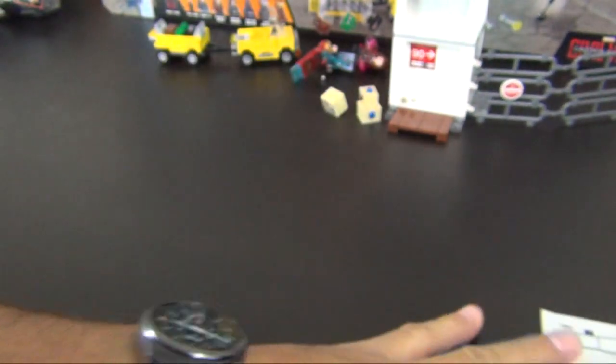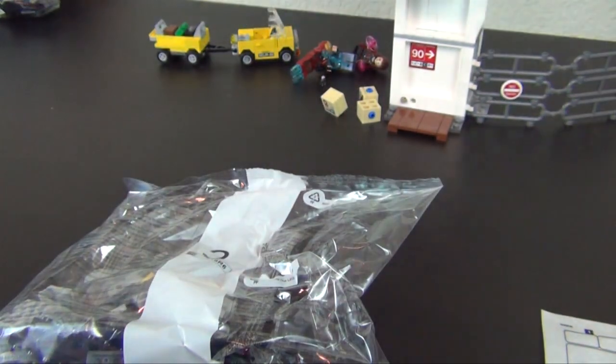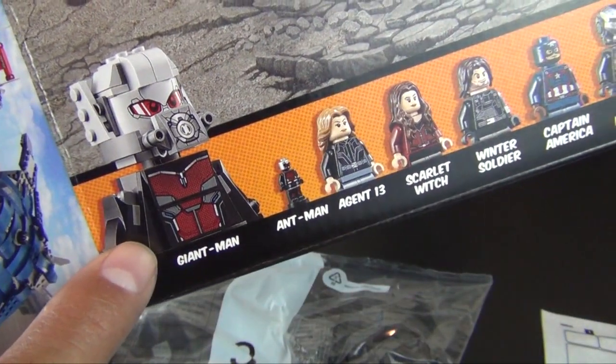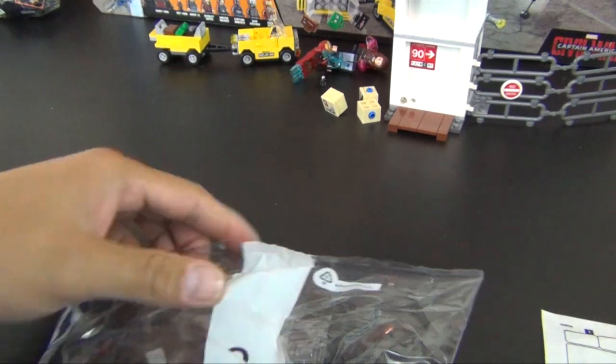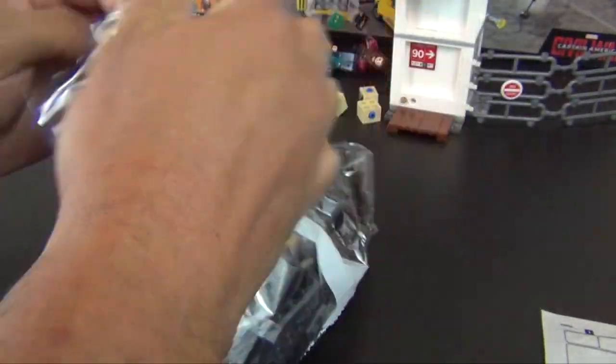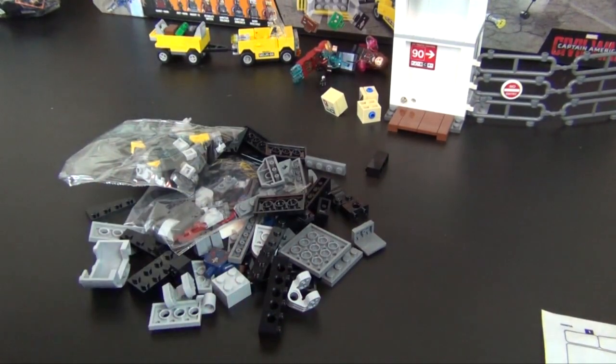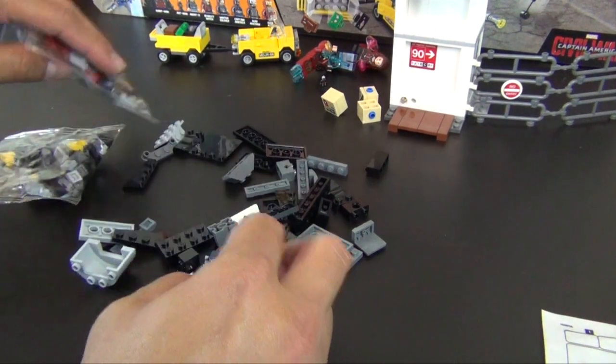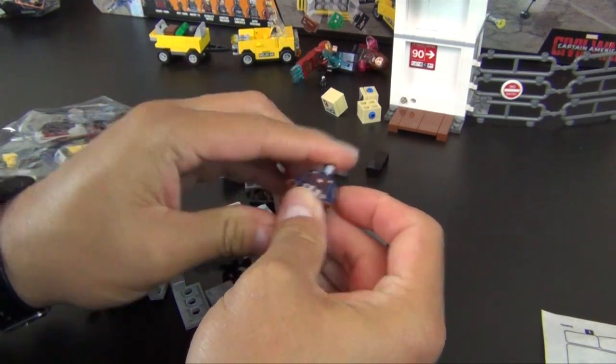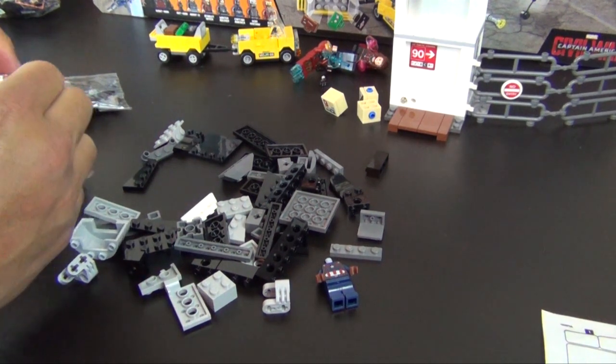So this is the part I'm looking forward to. If you remember the artwork on the box, there's the giant Ant-Man, the brick built minifigure. So that's what's in bag three. This is one of the main reasons why I bought this set, because how cool is it to build a brick built minifigure.